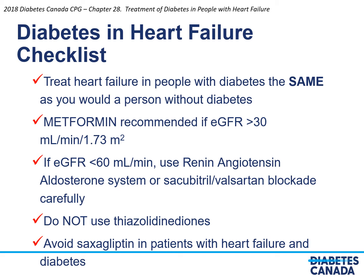When considering the checklist for patients with diabetes and heart failure, the following should be considered. First, treat heart failure in people with diabetes the same as in a person without diabetes. Second, metformin therapy is recommended if the eGFR is greater than 30 ml/min/m². Third, if the eGFR is less than 60 ml/min, use renin-angiotensin-aldosterone system antagonists or Sacubitril-Valsartan carefully. Fourth, do not use thiazolidinediones. Finally, avoid saxagliptin in patients with heart failure and diabetes.